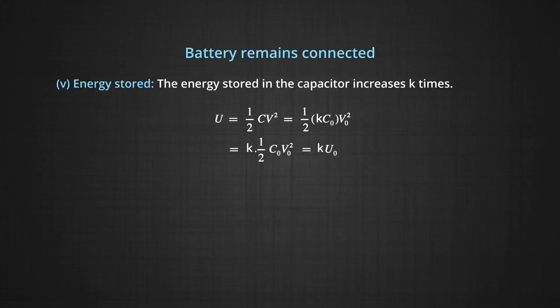Now, the energy stored. The energy stored in the capacitor increases K times. U is equal to half C times V₀ squared. Now, substituting the value of C, which is K times C₀, and potential remains the same, therefore the energy becomes equal to half K times C₀ times V₀ squared, which is K times U₀.